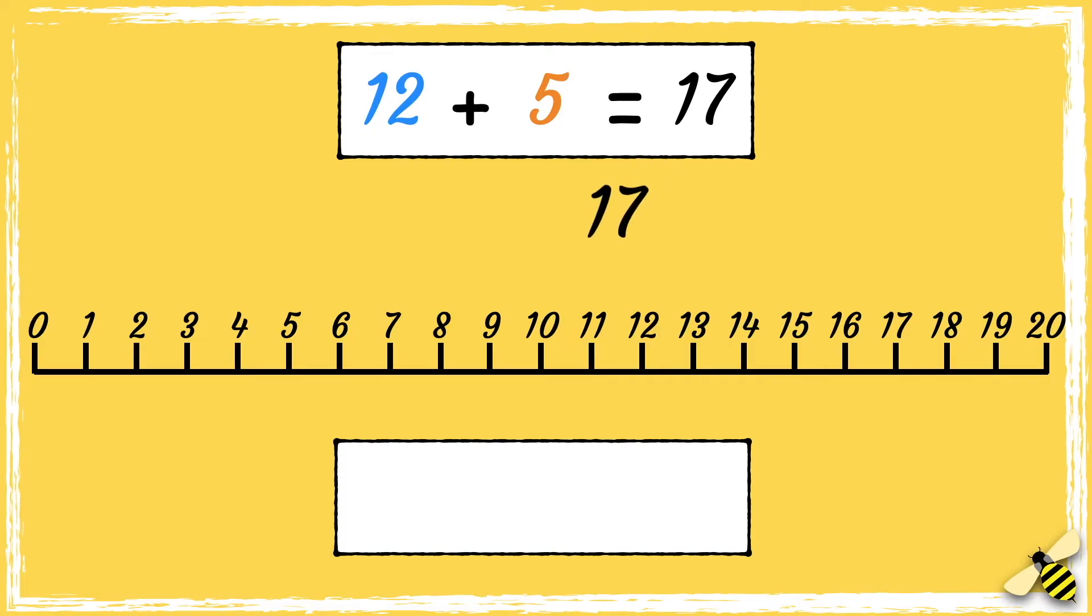Let's check this by using the inverse operation. So we start from 17, and we're taking away 5, so we need to jump back 5 digits: 1, 2, 3, 4, 5. We've landed on 12, which means our calculation is correct.